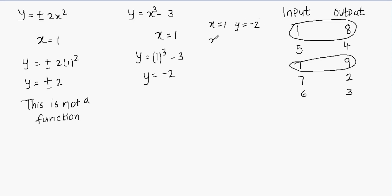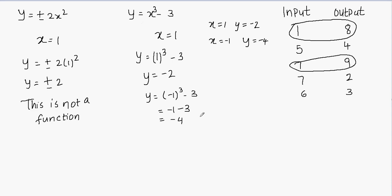Now let's plug in x equals negative 1. Then y equals negative 1 cubed minus 3, which is negative 1 minus 3, giving y equals negative 4. You can try x equals 2, 5, negative 4, or any value — for every x you plug in, you get a unique result for y. So this is a function.